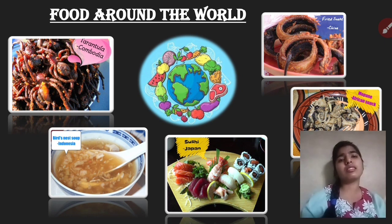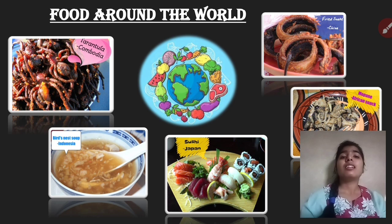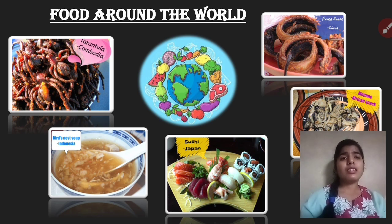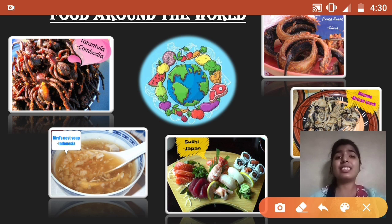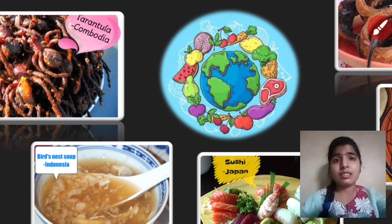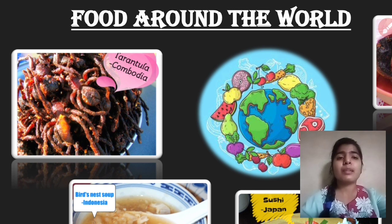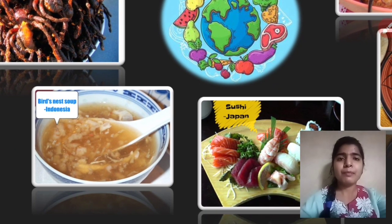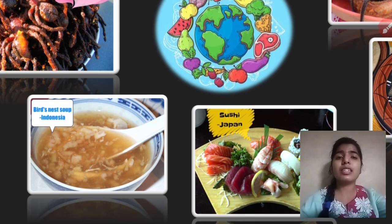Next, food around the world. Children, people have different choices and different types of food are eaten around the world. The food that people of other countries eat may seem weird to us. For example, tarantula is famous in Cambodia — yes, people eat it. And crabs are also eaten in various places.